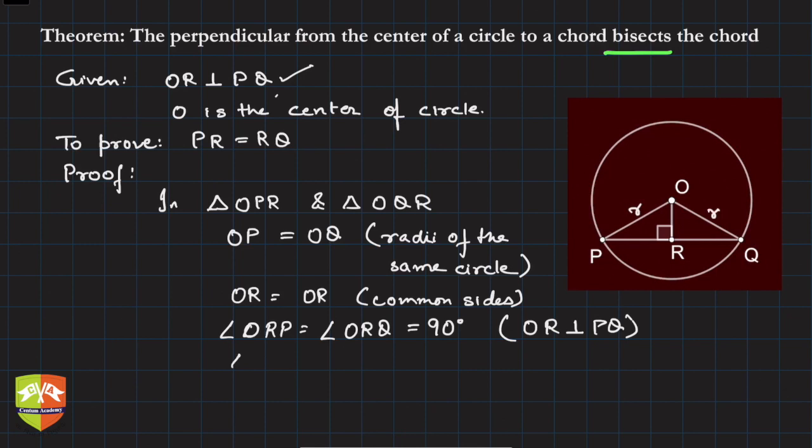triangle OPR is congruent to triangle OQR by RHS. Again, order of the vertices is very important.